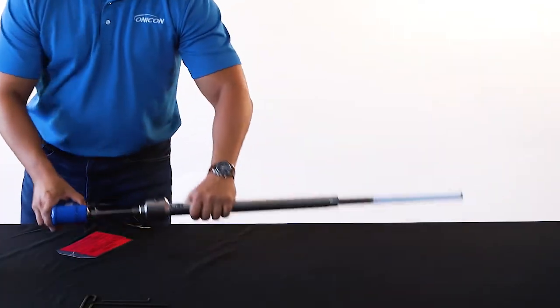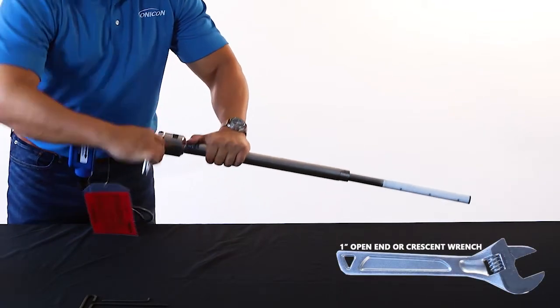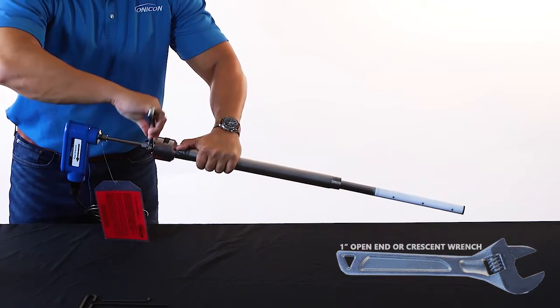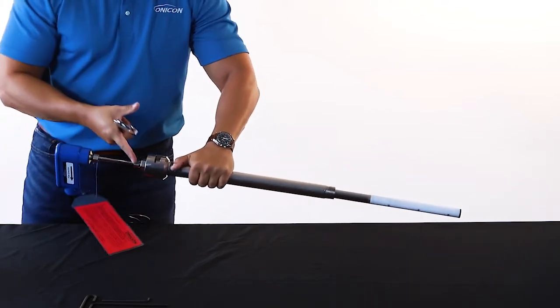With the flow sensor fully extended, use a 1 inch open end or crescent wrench to tighten the preload fitting completely. When done correctly, the preload fitting should be flush with the hot tap adapter preload housing.